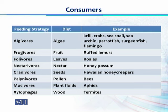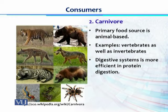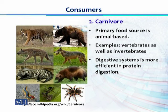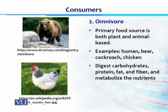The second group of consumers is called carnivores. Their primary food source is animal-based; they cannot utilize plants as a source of energy because their digestive system is not adapted to digest cellulose and fibers in large quantities. Different vertebrates and invertebrates have this carnivorous feeding mode, and their digestive system is well adapted to digest protein, which is the major component of any animal body.